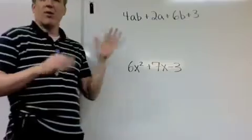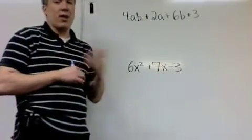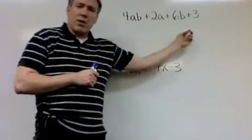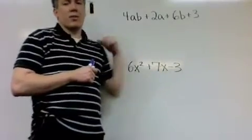two, six, three, four. There's no number that goes into all of those, except for one, which doesn't really count. So this is going to be grouping. Usually if you see four terms, it's going to be grouping.